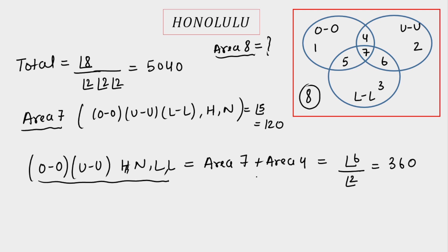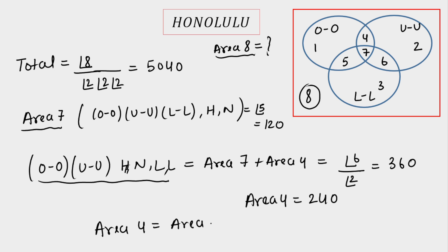By symmetry, the calculation for any pair being together is the same, so areas 4, 5, and 6 are all equal. Area 4 equals 360 minus area 7, which is 360 minus 120 = 240. Using symmetry, area 4 equals area 5 equals area 6, and all three equal 240.